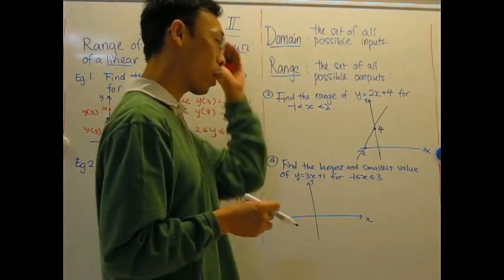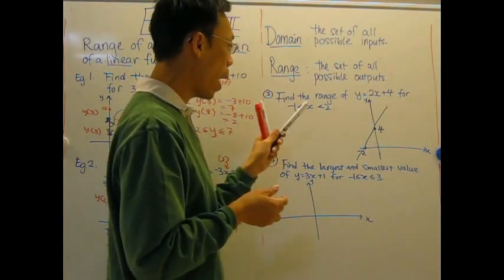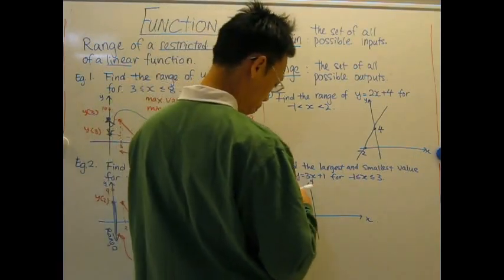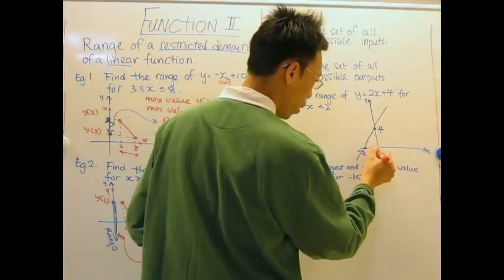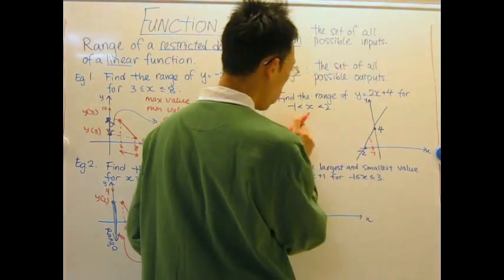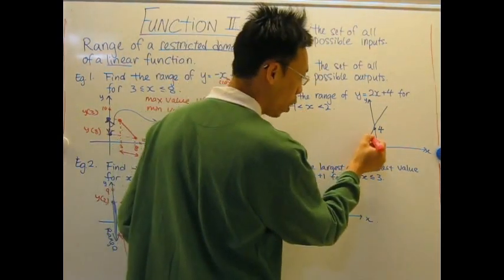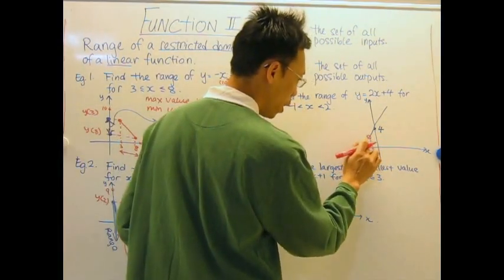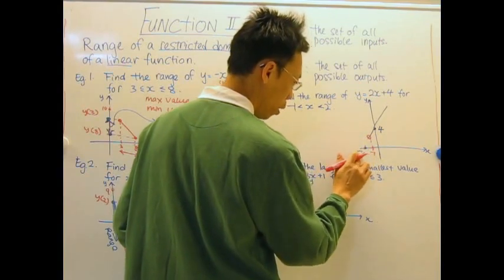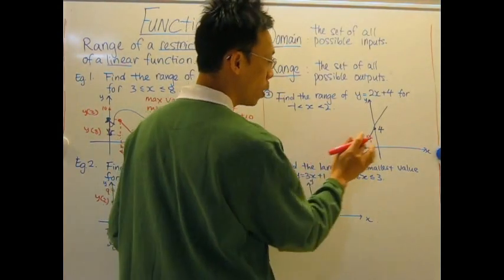Now, I have a restricted domain too. The restricted domain says x must be larger than negative 1. Negative 1, but this is not inclusive. So it's an open circle. So everything else before that is not needed. An open circle.